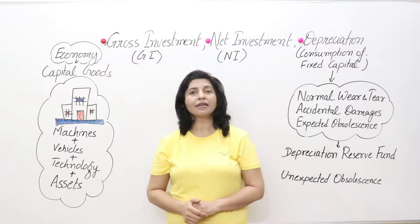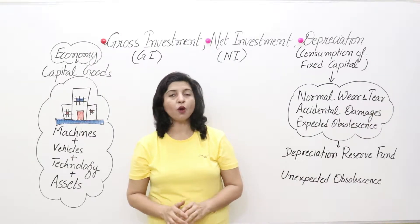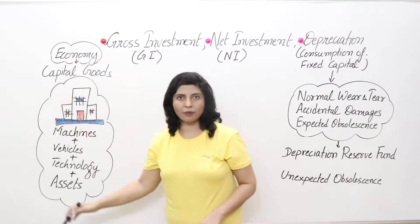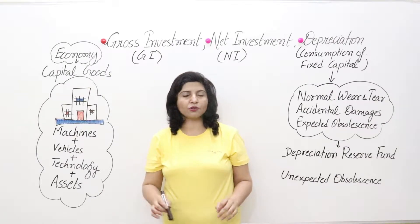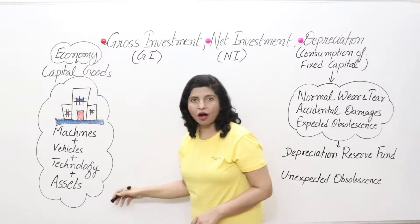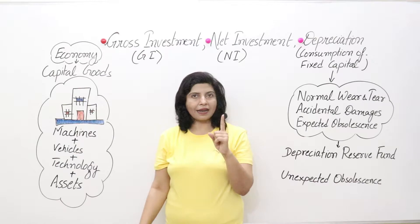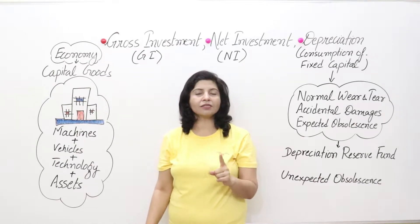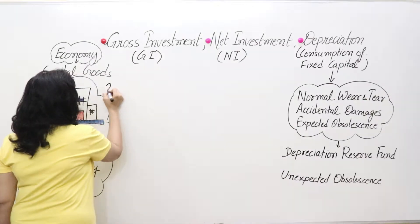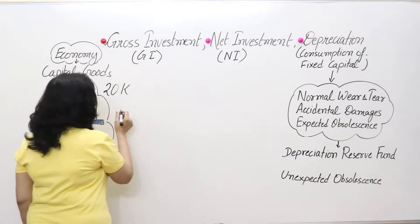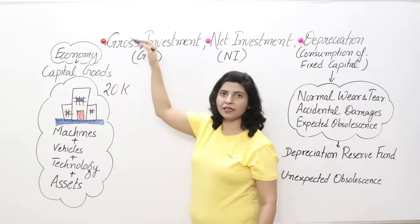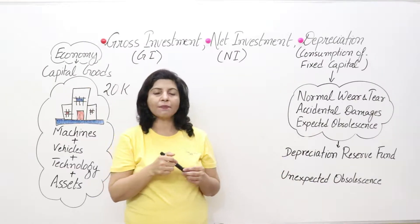First of all, what is gross investment? Gross means total. So in your economy, whatever capital goods are produced in one year, that is your gross investment. So the total production of capital goods in one year in any economy is known as gross investment. For example, if in your economy you produce 20,000 machines in one year, that is your gross investment.